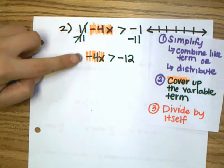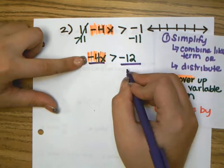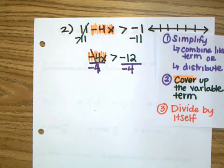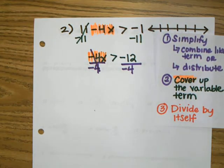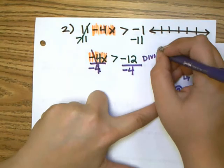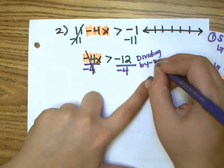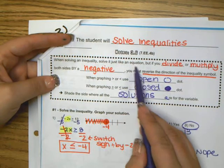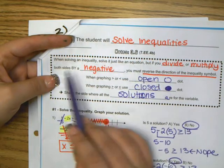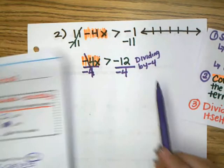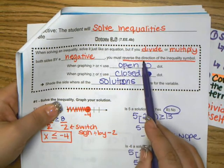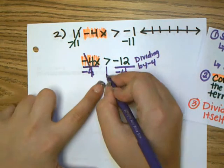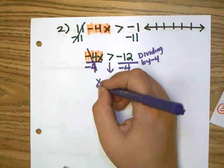The last step: when the variable term is by itself we divide by negative 4. However, when solving an inequality, if you divide or multiply both sides by a negative number — which we are doing here by dividing by negative 4 — we need to reverse the direction of the inequality symbol.